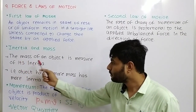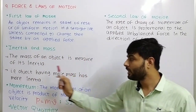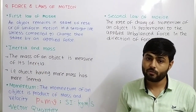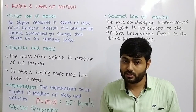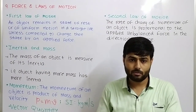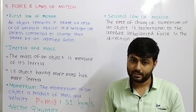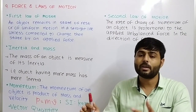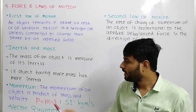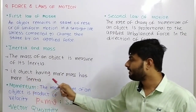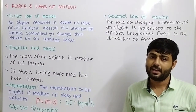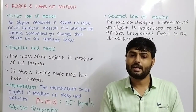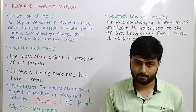So the mass of an object is a measure of its inertia. Mass is the measure of inertia. How can we measure inertia? If we can find the mass of a particular object, we can assume that the inertia of that object will be larger or smaller. An object having more mass has more inertia, and an object having less mass will have less inertia.